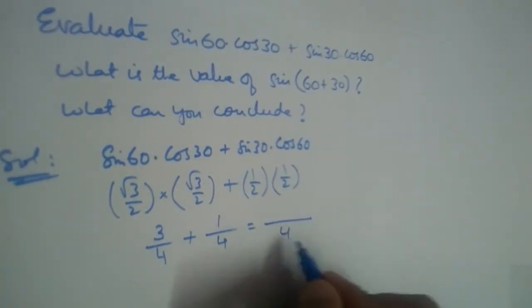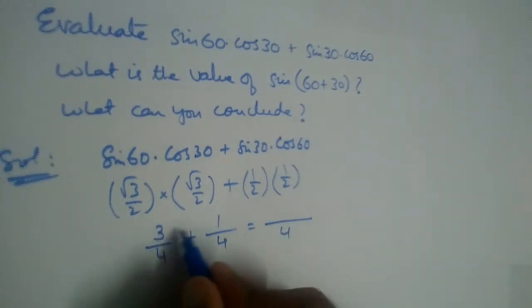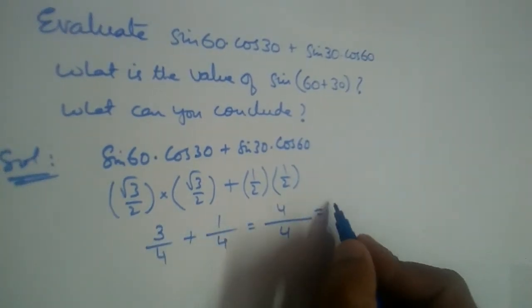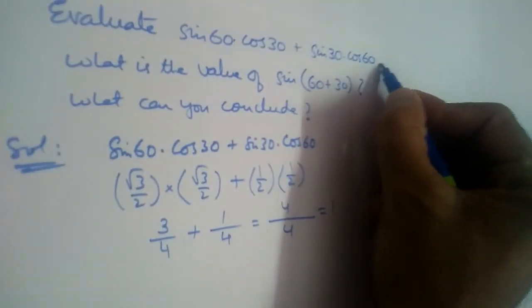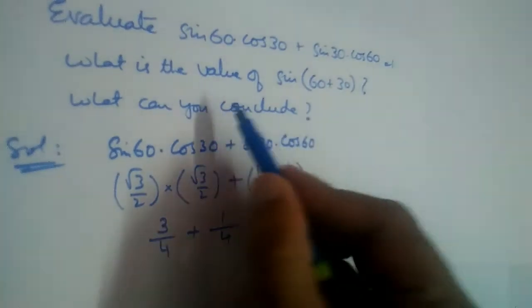The denominator is the same, so write it one time: 3 plus 1 is 4, so 4 by 4 is 1. What is the value of this one? It is equal to 1.